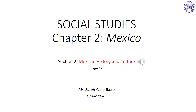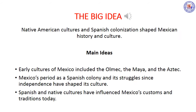Hello grade 10. In this session we will start with section 2 of chapter 2 and we are going to talk about Mexican history and culture. Please open your books on page 42. The big idea here is that Native American cultures and Spanish colonization shaped Mexican history and culture. The main ideas are: early cultures of Mexico included the Olmec, the Maya, and the Aztec. Mexico's period as a Spanish colony and its struggles since independence have shaped its culture. Spanish and native cultures have influenced Mexico's customs and traditions today.